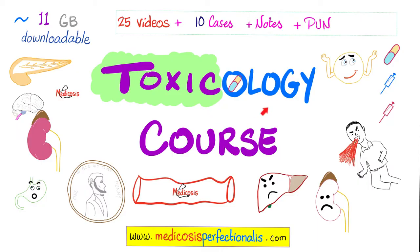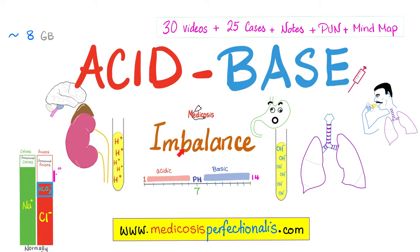If you want to learn about toxicology and the different toxidromes that can affect the human body - for example, aspirin toxicity, acetaminophen toxicity, anticholinergic toxicity - download my toxicology course on my website, medicosisperfectionalis.com. If you want to master the anion gap, osmolar gap, acidosis, alkalosis, HAGMA, NAGMA, base excess, base deficit, compensated versus uncompensated, download my acid-base imbalance course on my website.